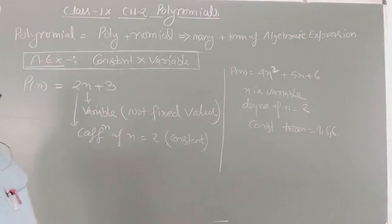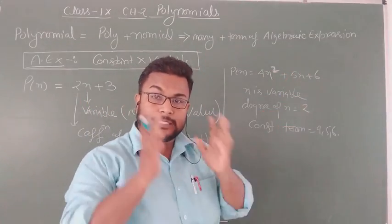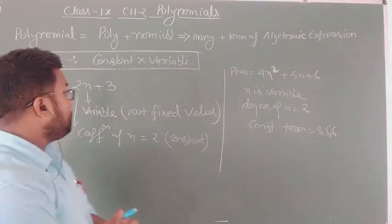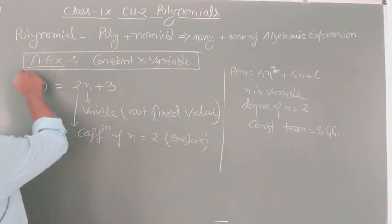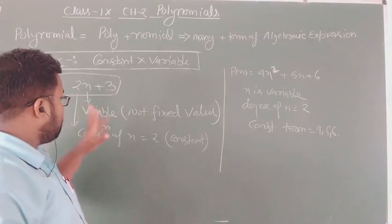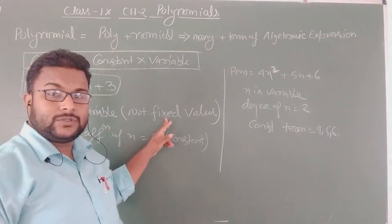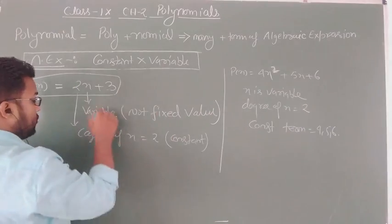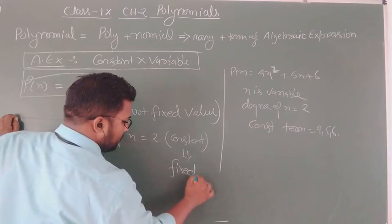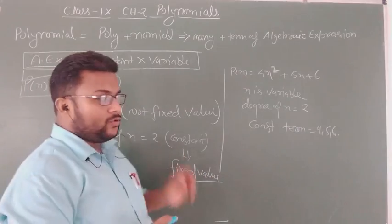Again, students, let me explain. What is the polynomial? A polynomial is made of terms of an algebraic expression. An algebraic expression is defined as constant into variable form. A polynomial is noted by P(x) = 2x + 3, where x is the variable — a non-fixed value — and the constant is a fixed value.